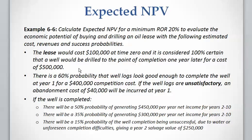There is a 60% probability of reaching completion, in which case we pay another $400,000 at year one. With 40% probability, if we don't complete the well, we pay $40,000 of abandonment costs at year one. In the 60% success case we face three new sub-cases: 50% probability generating $450,000 from year 2 to year 10; 35% probability generating $300,000 from year 2 to year 10; and 15% probability with only a $250,000 salvage value at year two.